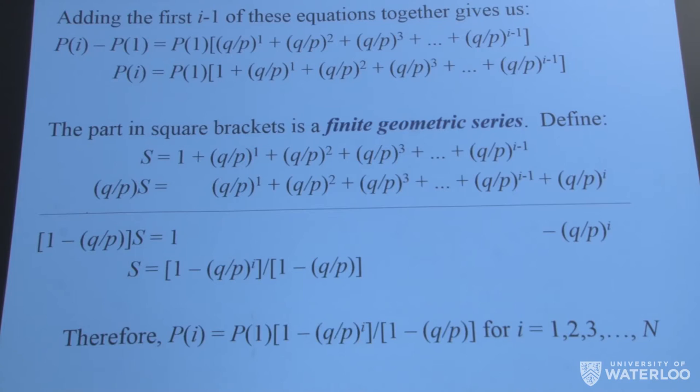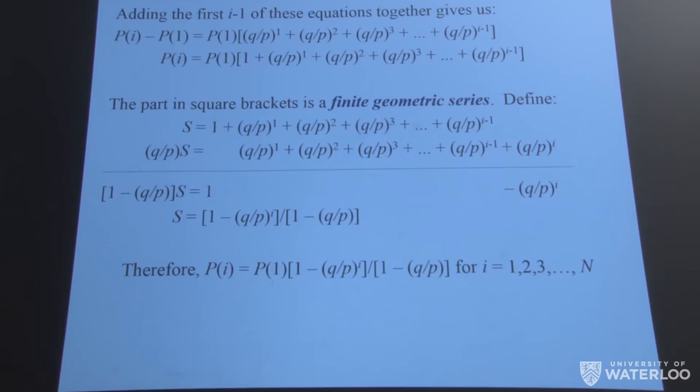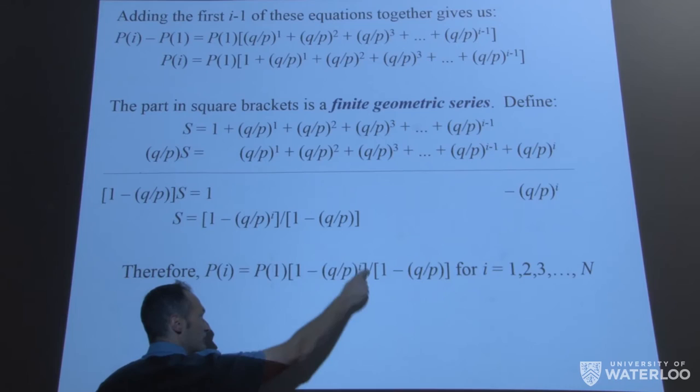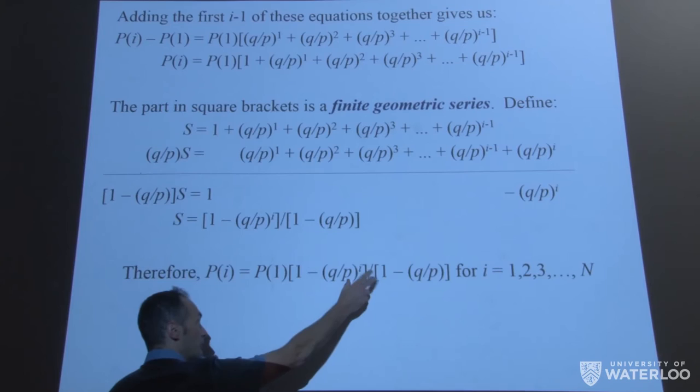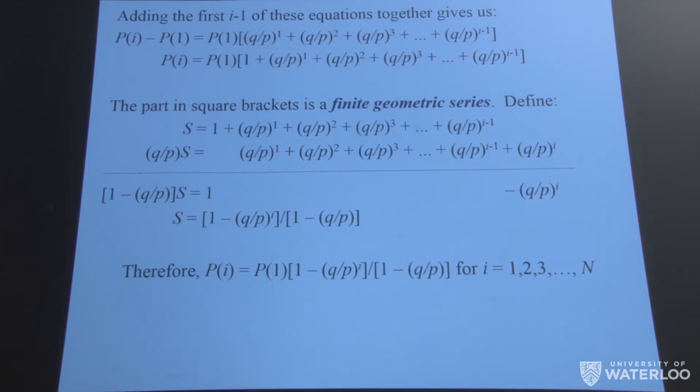So with that expression, we now can write P of i in terms of this unknown quantity of P of 1, and we can replace the finite geometric series with a nice closed-form expression that we just developed. And this holds true for all i going from 2 to n, but it also holds true even for i equals 1. If you simply plug in, notice that when you plug in i equals to 1, you still get an equality. P of 1 is still P of 1. So it even holds true in the case of i equals 1.